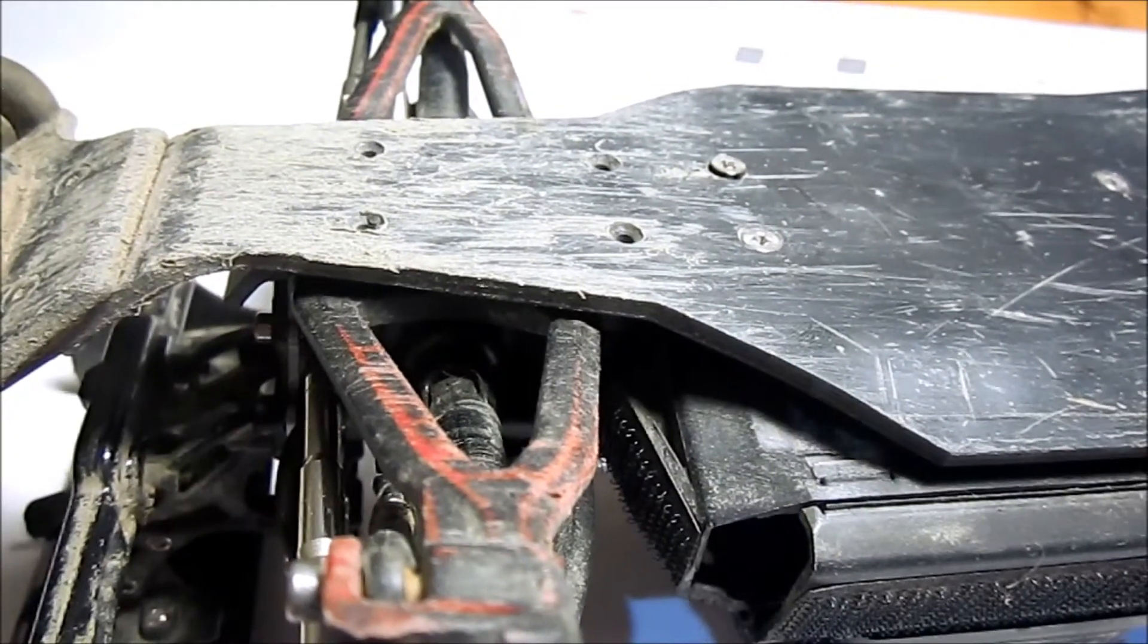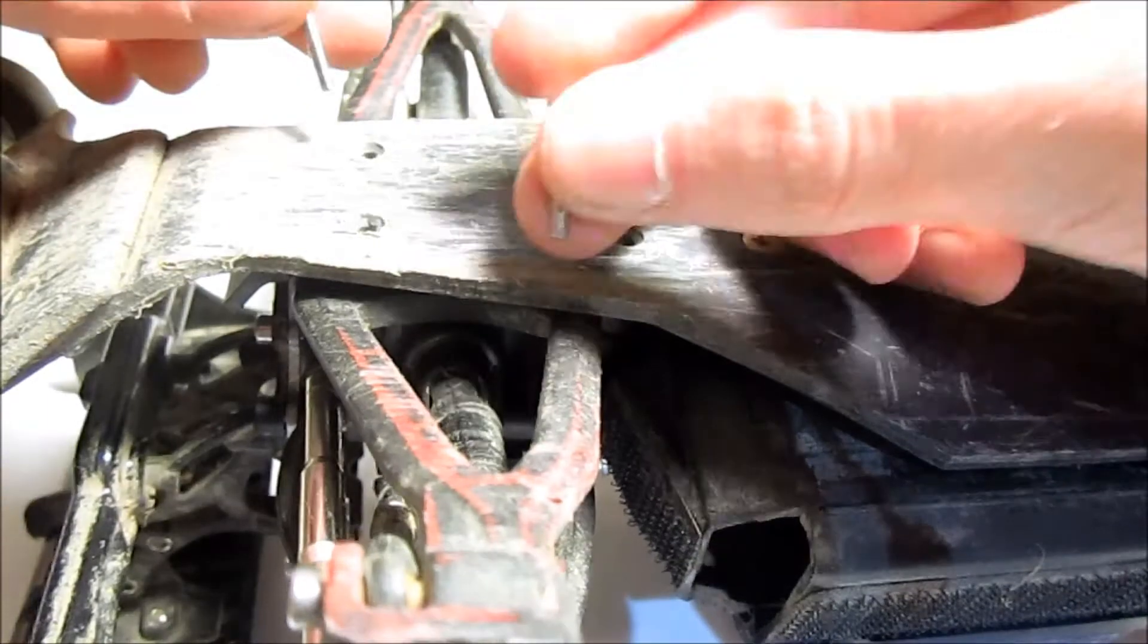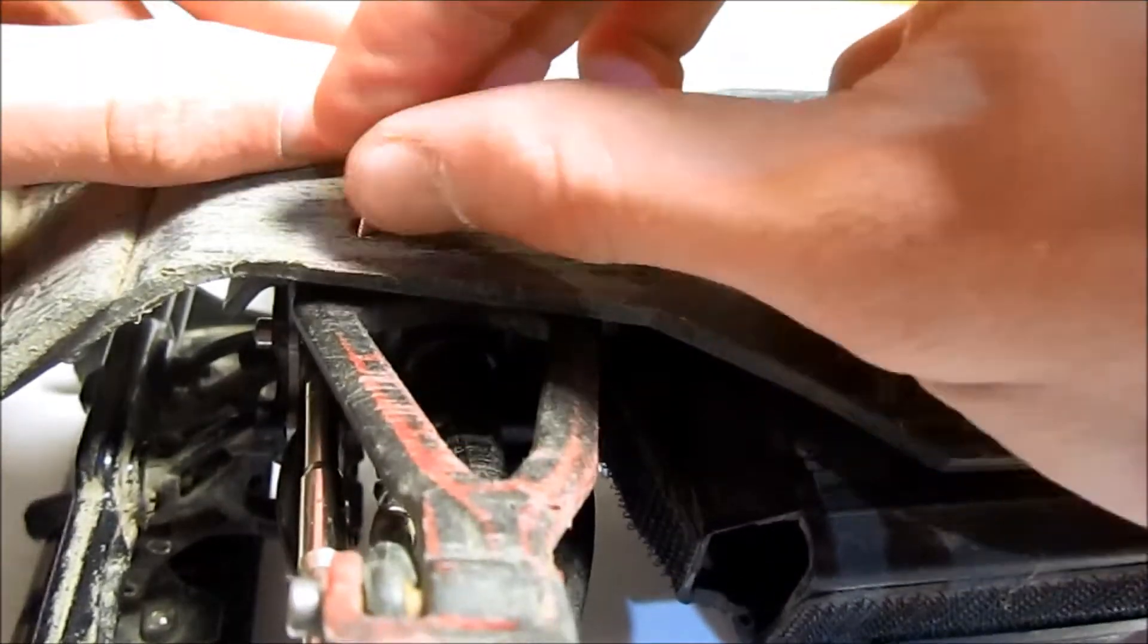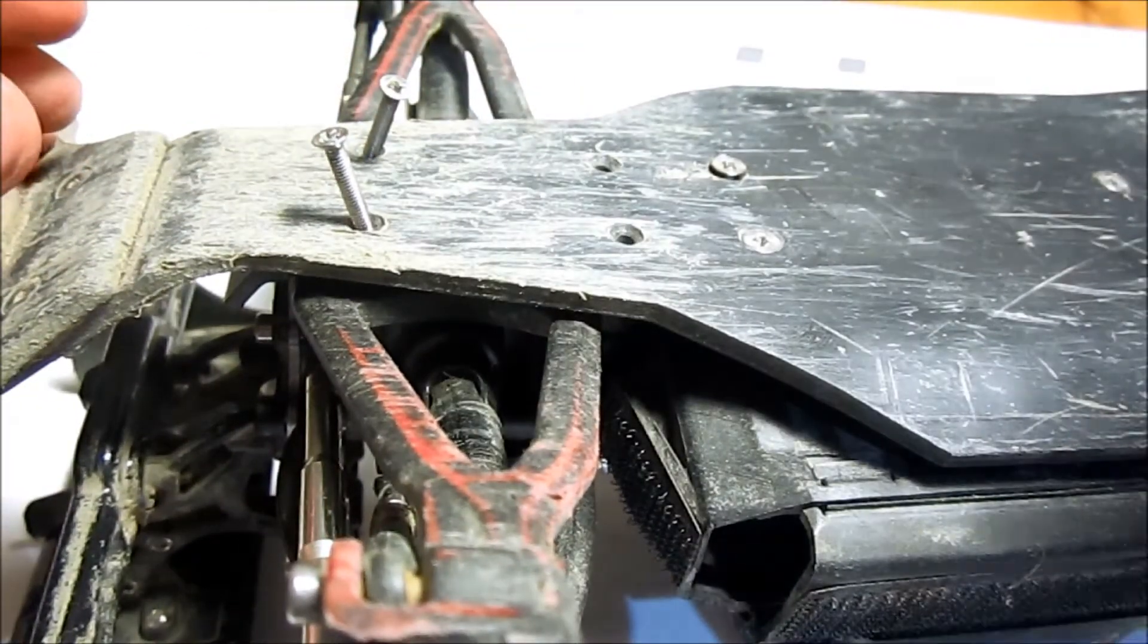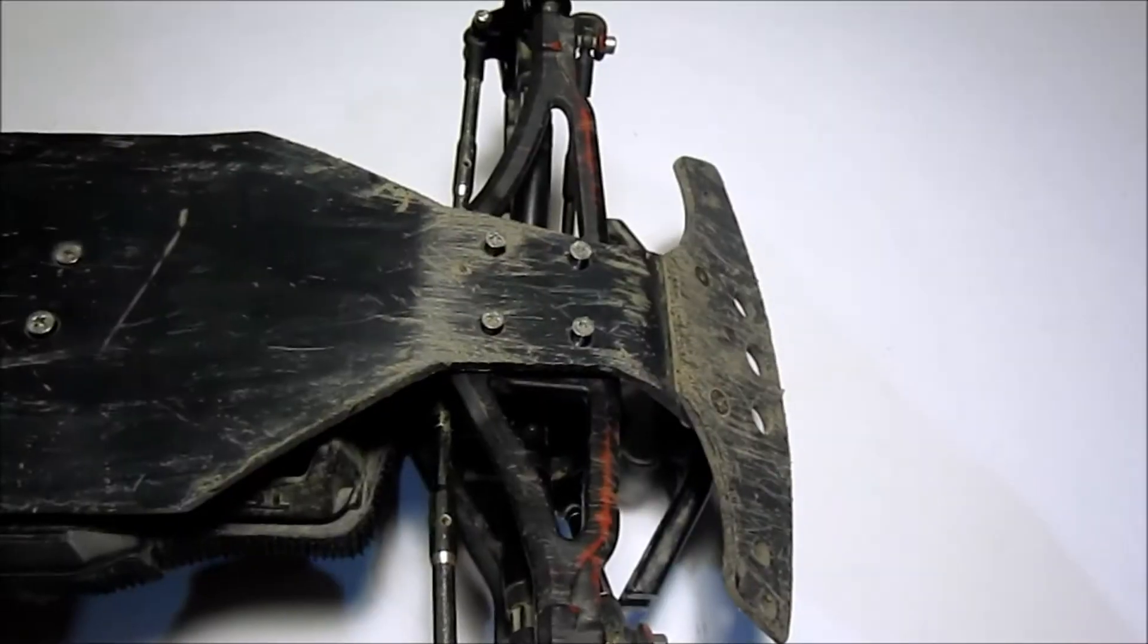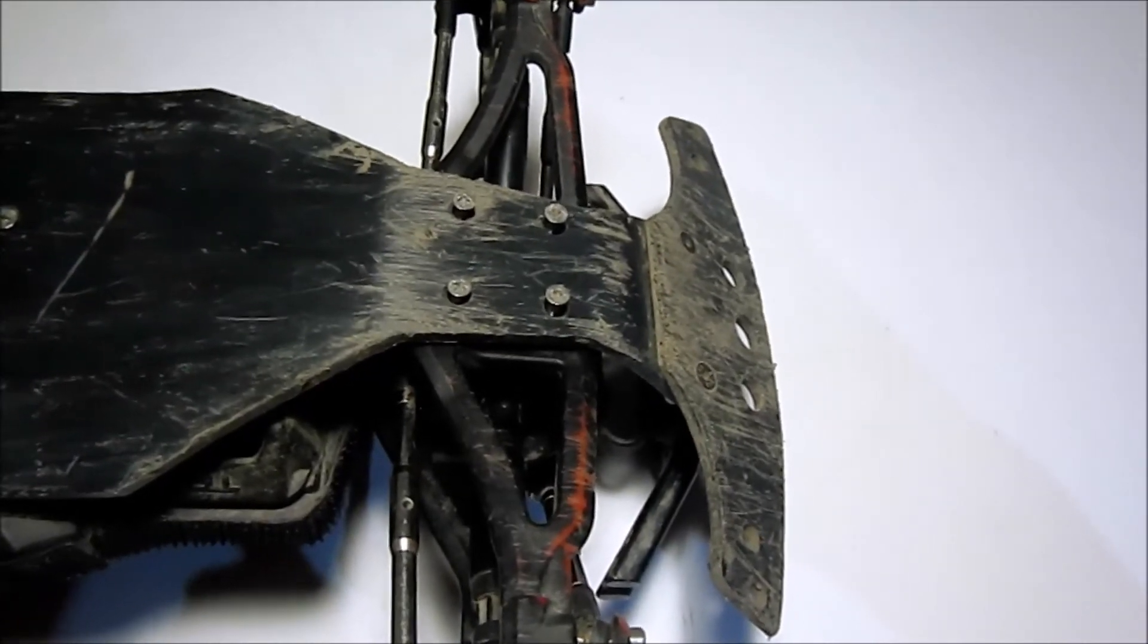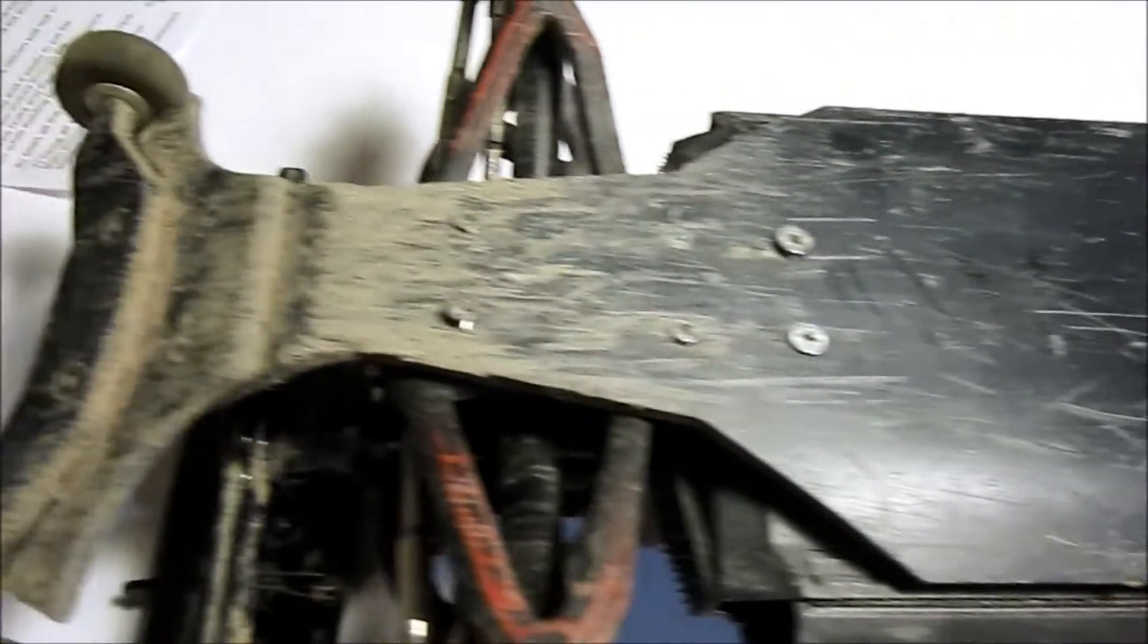Also insert the screws for the rear. The shortest ones you get in the kit go there, and the other screws go there. Now it's time to tighten down all the screws, starting with the front one and moving backwards.